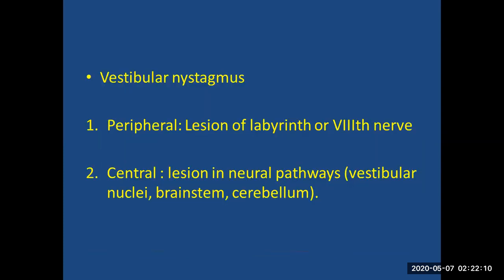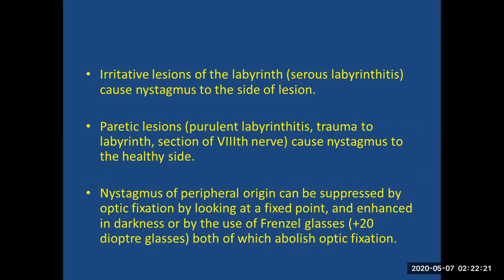Vestibular nystagmus can be of peripheral or central origin. Peripheral nystagmus is localized to the labyrinth or the 8th cranial nerve, while central nystagmus involves the neural pathway — vestibular nuclei, brainstem, or cerebellum. Irritative lesions of the labyrinth, as in serous labyrinthitis, cause nystagmus toward the side of the lesion. Paralytic lesions, purulent labyrinthitis, trauma to the labyrinth, or section of the 8th nerve may cause nystagmus toward the healthy side.